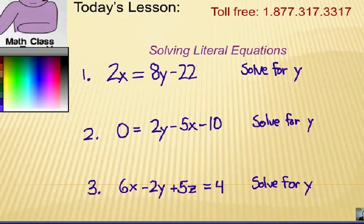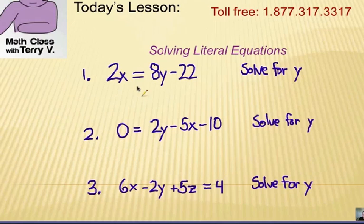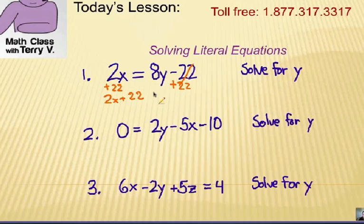If we take a look at the first one, notice that we have 8y right over here. We need to isolate that y. So the first thing we're going to need to do is add 22 to each side. Over here, that'll be 2x plus 22, those are unlike terms, you can't add them together, equals 8y.